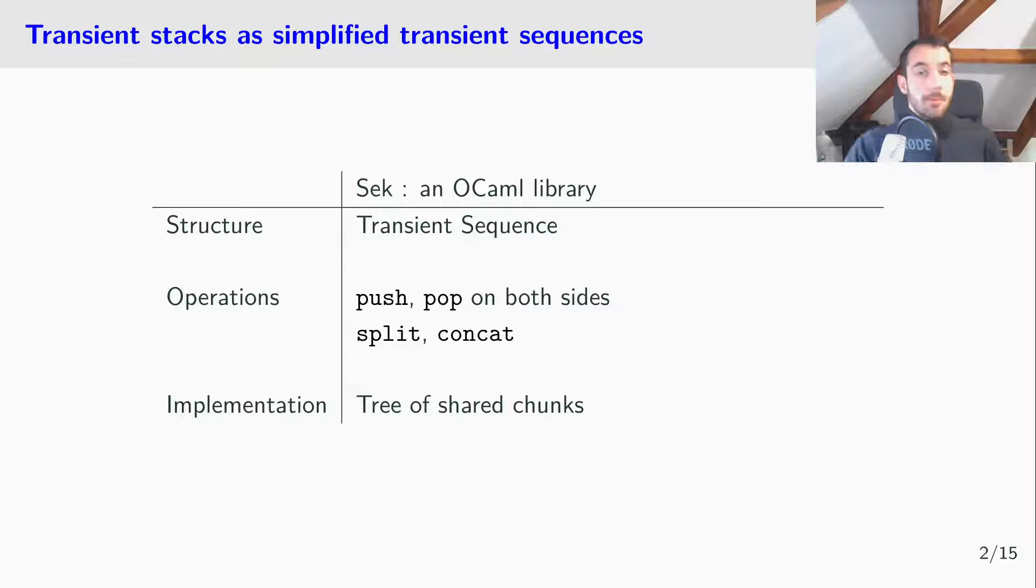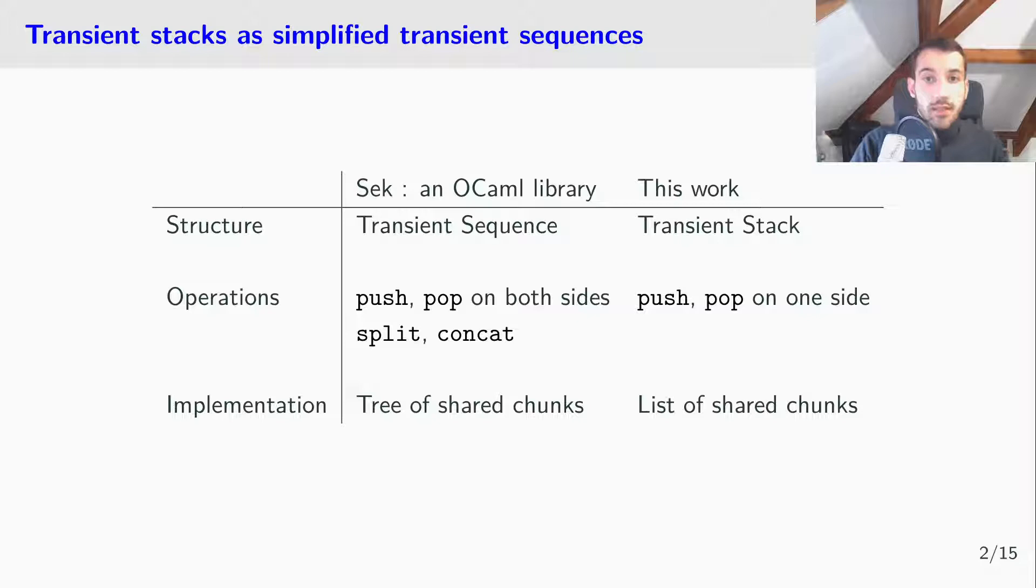But Sec is a complex data structure, so we focus here on a scaled down transient stack, that is push and pop on one side and implemented using a list of shared chunks. But even if a transient stack is not very interesting by itself, this simplification preserves the two main formalization challenges of Sec.